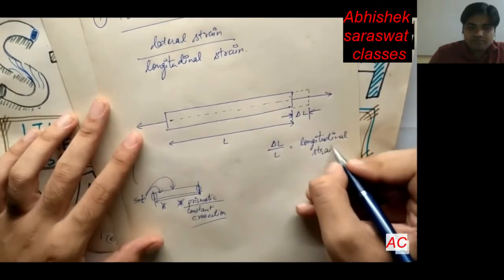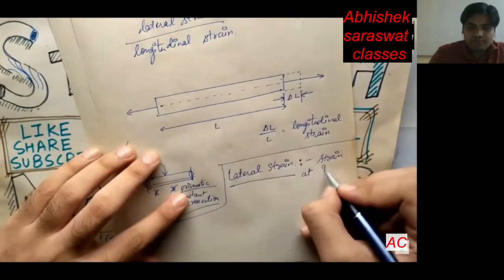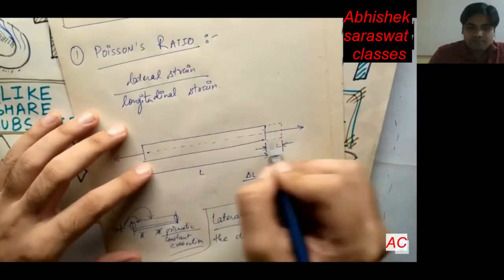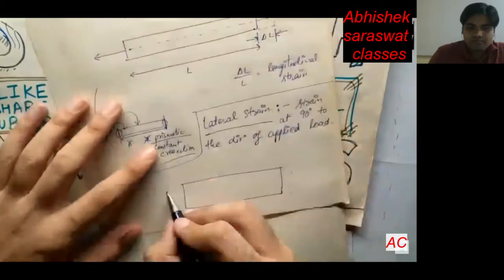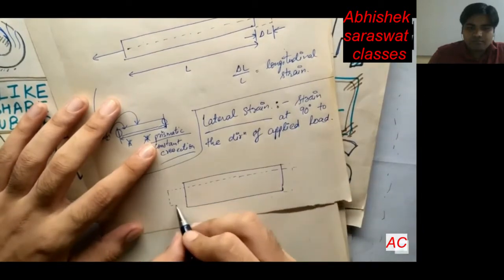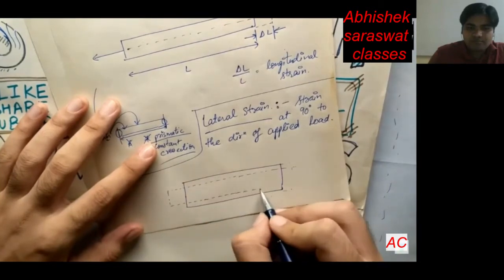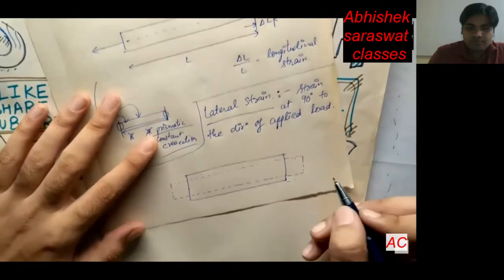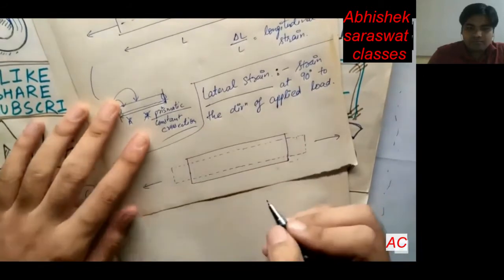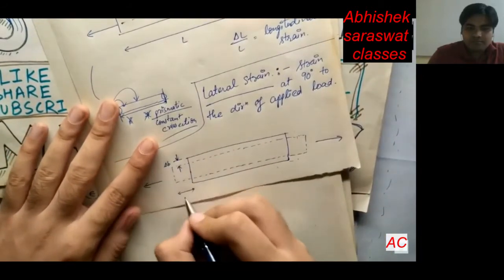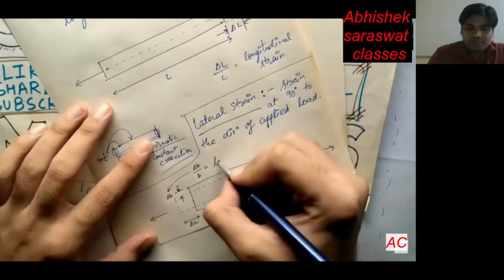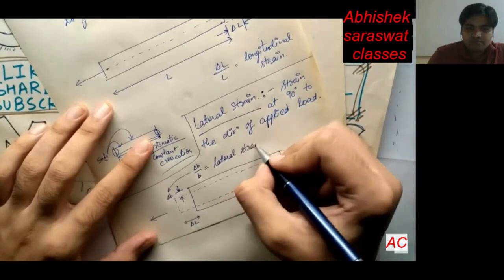Lateral strain is the strain at right angles to the direction of the applied load. For a rectangular prismatic bar, when a tensile force is applied along its length, the width and depth change. Lateral strain in this case will be delta B divided by B, which is the change in width divided by the original width, and delta D divided by D, which is the change in depth divided by the original depth.